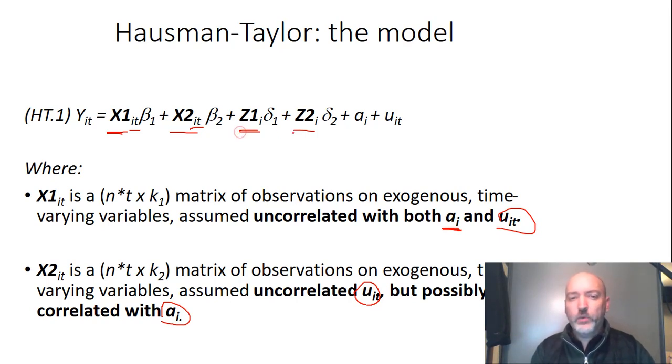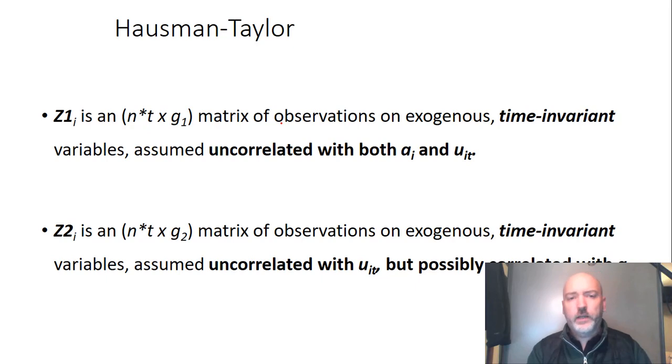And then these other two categories, the Z1 and the Z2, note the absence of a T subscript. So these are going to be things like education or gender dummy variable that are time-invariant and may or may not be correlated with the AI term. So using the same kind of notation, the Z1 is going to be uncorrelated with the AI and the UIT. The Z2 may be correlated with the AI, so this is going to be the real problematic component, because we can't apply the fixed effects transformation because we would eliminate the variable because it's time-invariant. So here's the genius of the model.